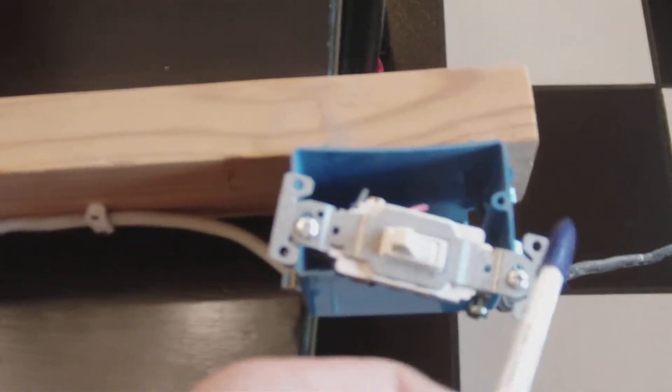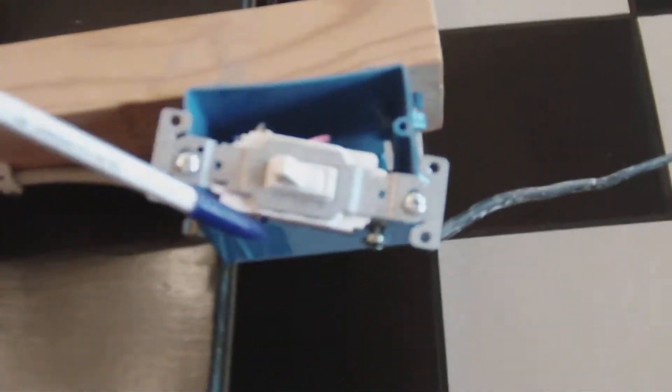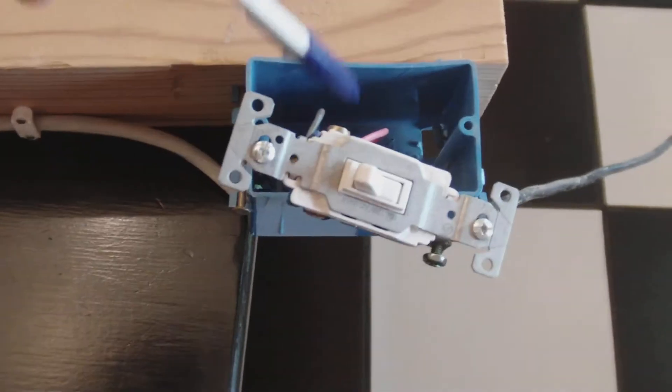So to go over it real quick, the black power wire coming into the first three-way switch is connected to the black screw, which is right here. The other two wires coming from the traveler makes no difference. Connect them to either side.